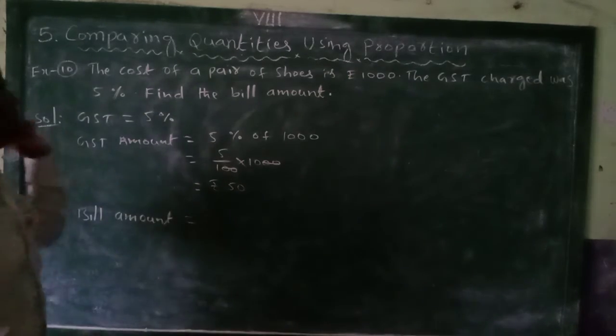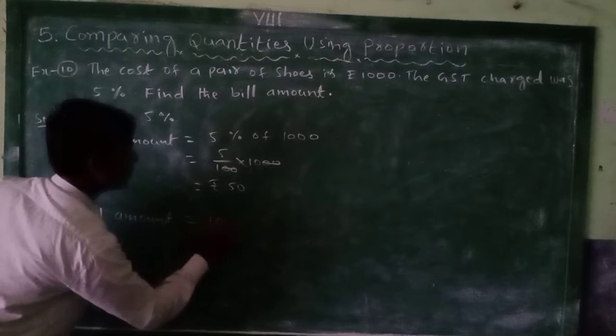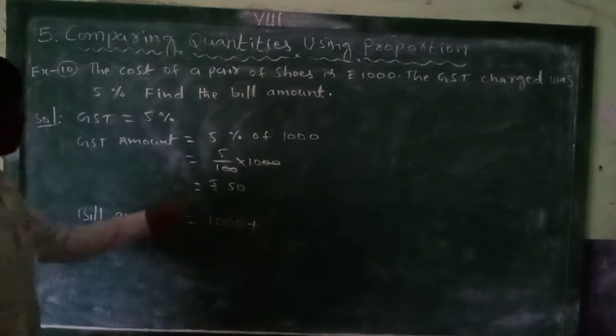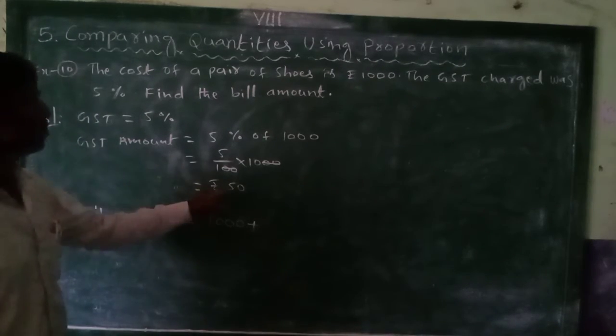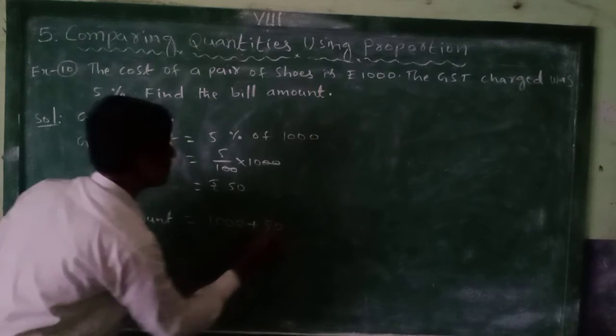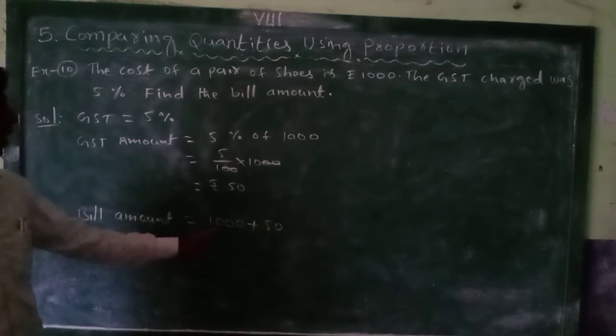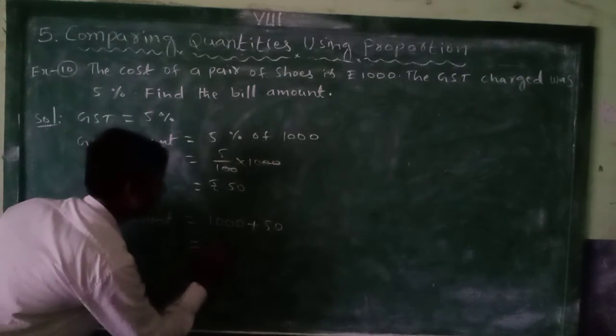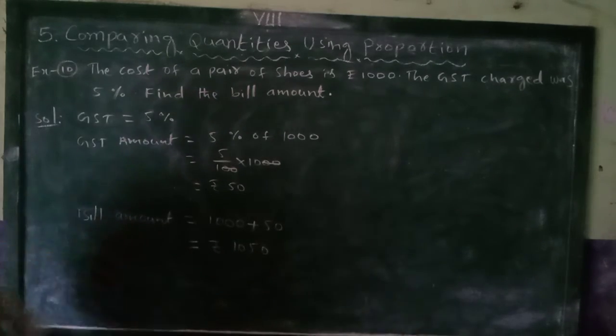Bill amount equal to, actually shoes price equal to how much? 1000. 1000 plus this one, GST amount equals how much? 50. So 1000 plus 50, rupees 1050 is the bill amount.